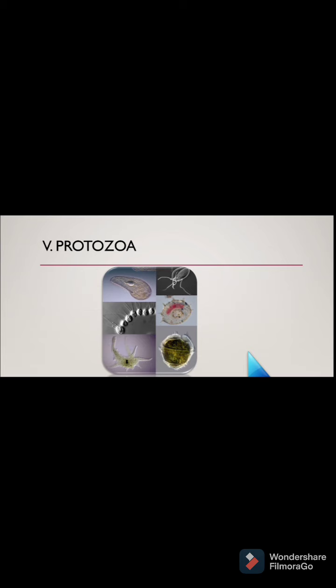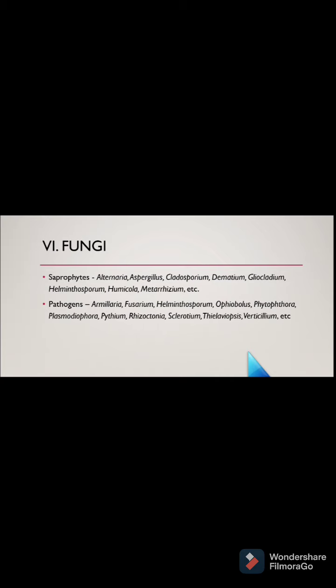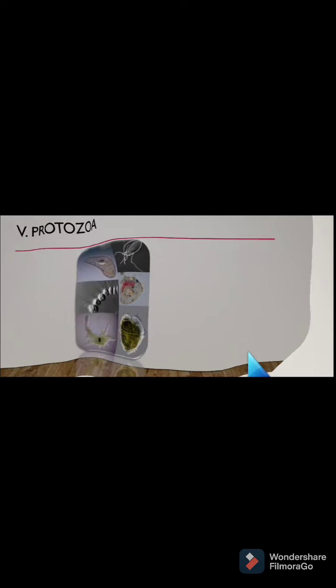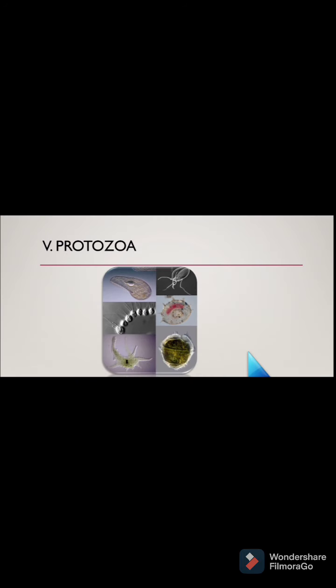The next group is protozoa. In most soils, most members of the microfauna remain in a cyst form and the population is about 10 to the power 3 per gram of wet soil. The role of soil protozoa is predatory, as they eat upon bacteria and thereby regulate their population. The number of protozoa can be correlated with plant growth and indirectly with the status of soil nutrients.